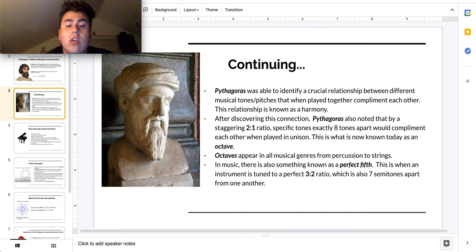Octaves appear in all genres of music from percussion to strings. In music, there is also something known as a perfect fifth. This is when an instrument is tuned to a perfect three-to-two ratio, which is also seven semitones apart from one another.